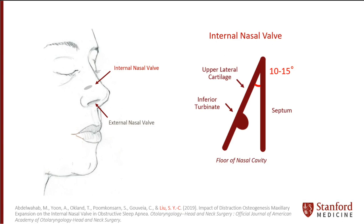The narrowest part of the nasal passage is called the internal nasal valve. This is a valve formed by the septum, the inferior turbinates, the upper lateral cartilage, and the nasal floor.